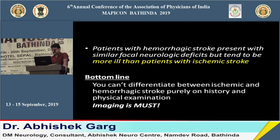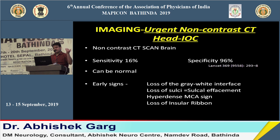The investigation of choice for acute onset focal neurological deficit with a clinical diagnosis of stroke is non-contrast CT scan of the brain. Although the sensitivity of CT scan is very low — only 16 percent — the specificity is very high at 96 percent.